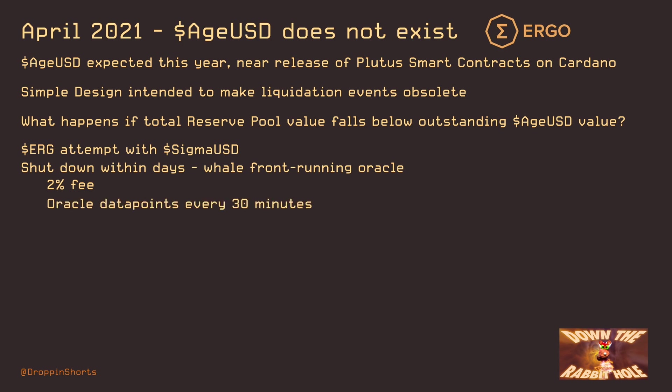Oracle data points update every 30 minutes, and they cannot fluctuate more than four percent per interval. So no matter what happens in the real world, inside the contract the price cannot move more than four percent every 30 minutes.